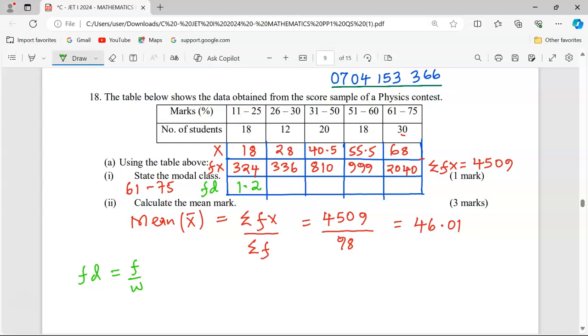The next class, when we divide 12 by the width of 5, we get 2.4. 20 divided by a width of 20 gives us 1.0. Then 18 divided by a width of 10 gives us 1.8. Finally, 30 divided by a class width of 15 gives us 2.0. These are the frequency densities to be plotted on the vertical axis against the class boundaries on the x-axis.